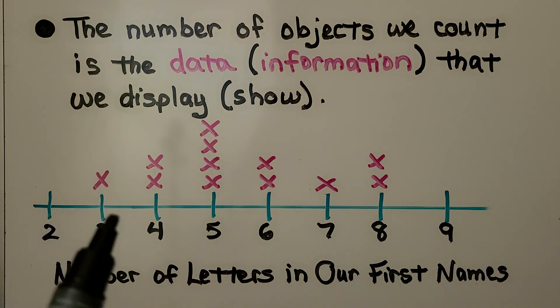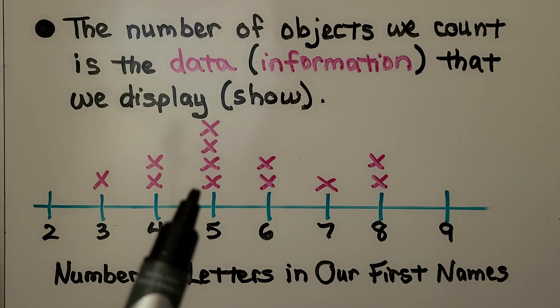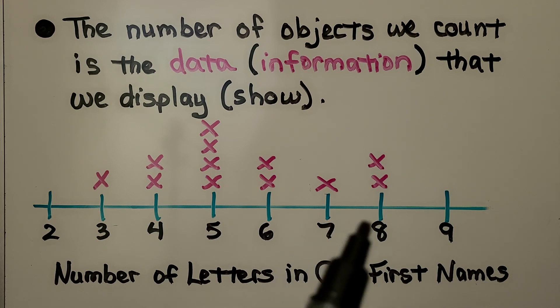Someone has three letters, two people have four letters, four people have five letters in their name. Then we have two people with six letters in their name, one with seven, and two people with eight letters in their first name.